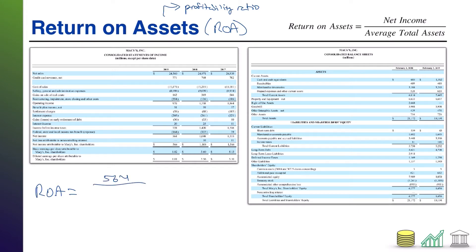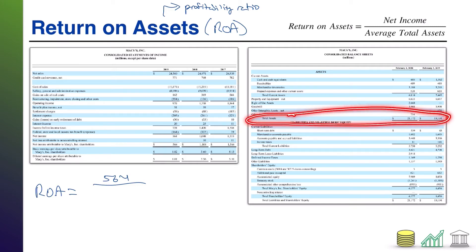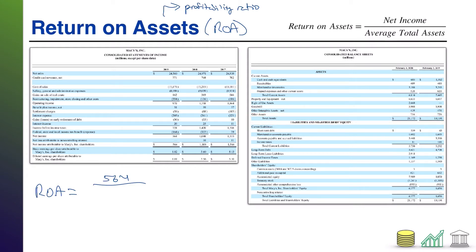For average total assets, typically in an introductory accounting course, you take last year and this year, add them together, and divide by two — just a simple average. Looking at Macy's total assets, we have last year 19,194 and this year 21,172.